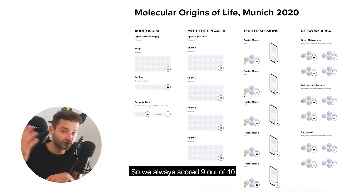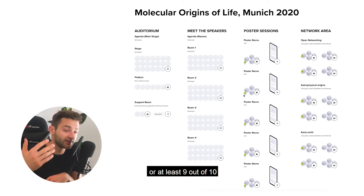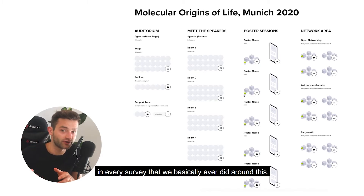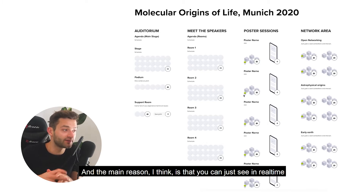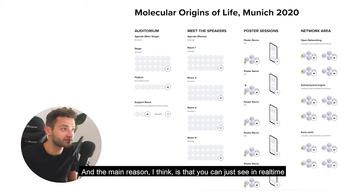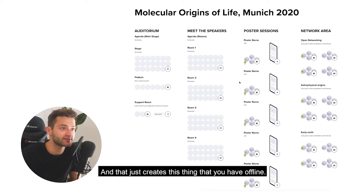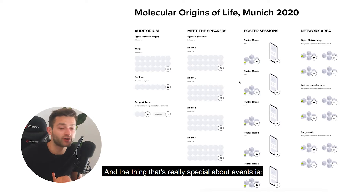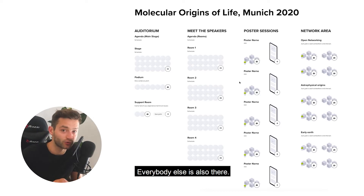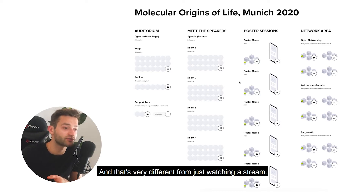The feedback was great. We always scored 9 out of 10 or at least 9 out of 10 in every survey that we basically ever did around this. And the main reason is that you can just see in real time where everybody is on that map. And that just creates this thing that you have offline — the thing that's really special about events is everybody else is also there. And that's very different from just watching a stream.